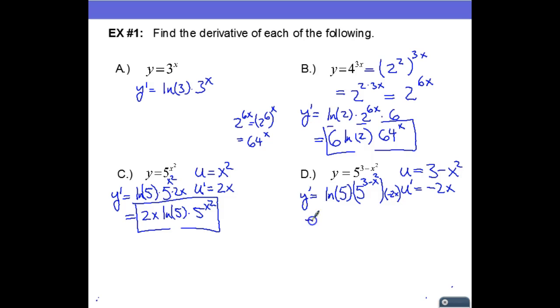So we can rewrite this and we have negative 2x times the natural log of five times five to the three minus x squared.